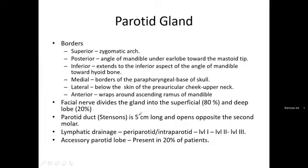Anteriorly the parotid gland has the ramus of the mandible, and posteriorly it is the angle of the mandible. The parotid gland lies in between the mandible and the zygomatic arches.